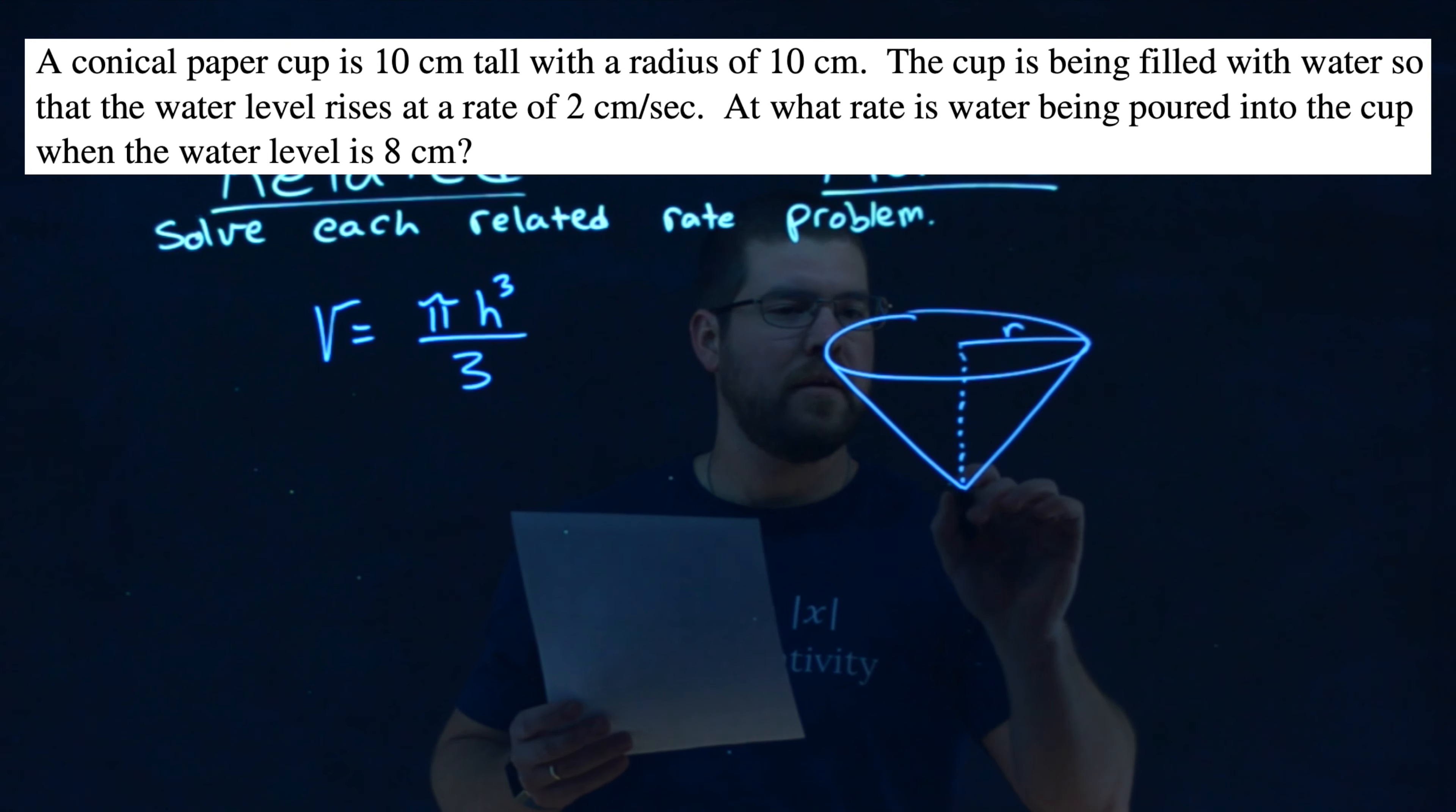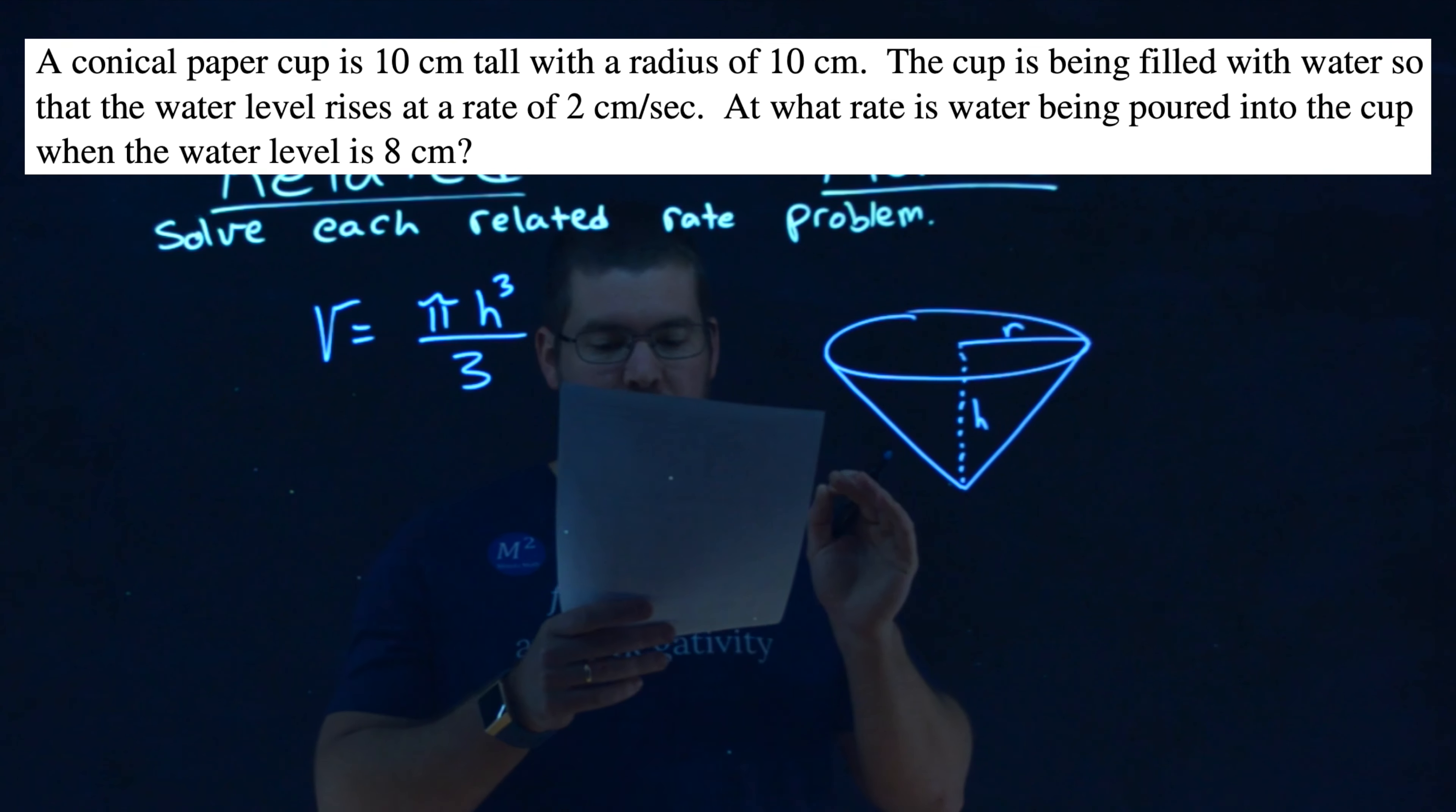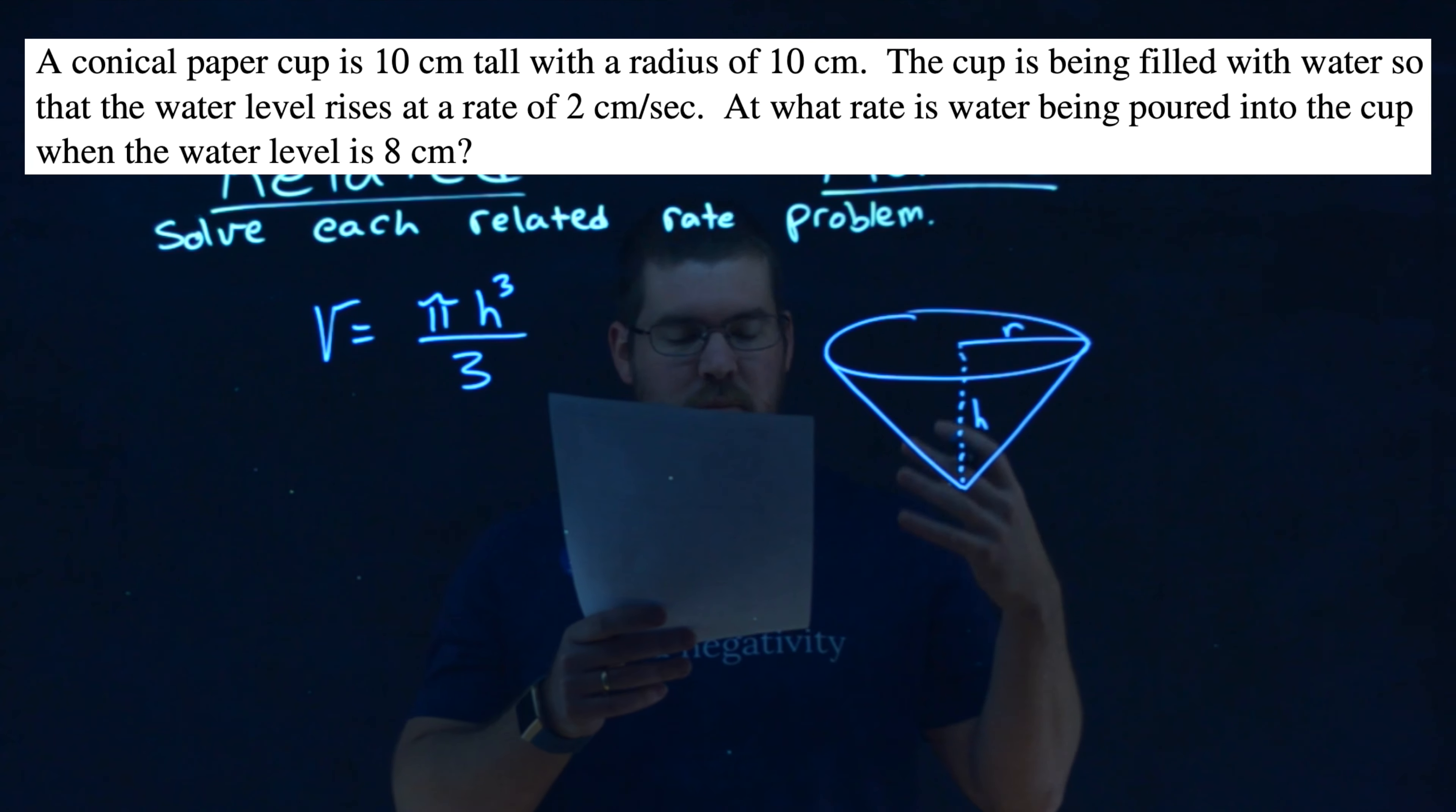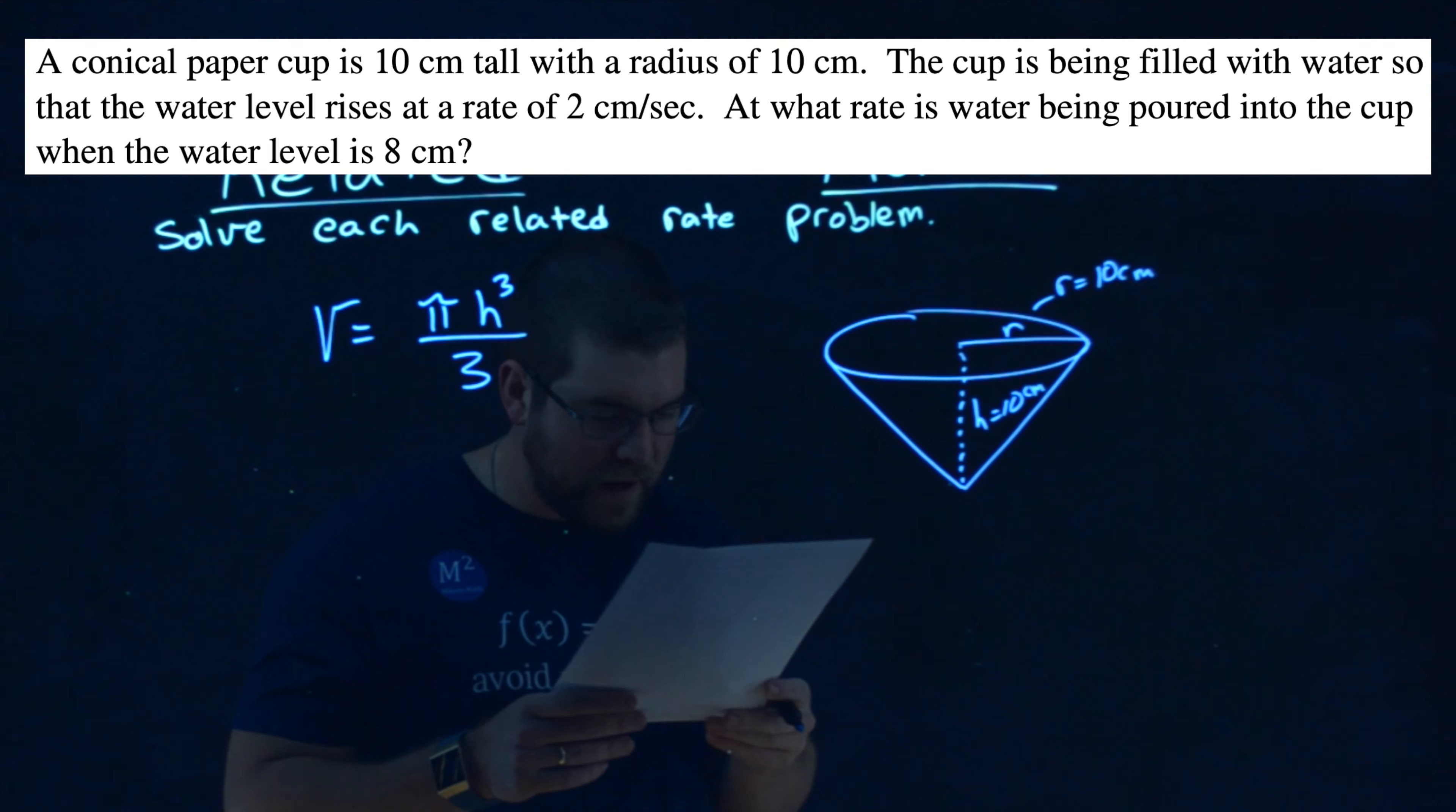Now, what do we know about this cone? Okay. They said the cone is 10 centimeters tall, so the overall height of the cone is 10 centimeters, but the radius is 10 centimeters. So the height is 10 centimeters, and the radius is 10 centimeters as well.